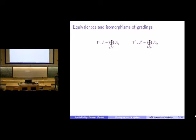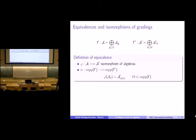Now, to classify gradings we need to know when two gradings are equal. There are at least two ways of doing this, and we work with both. Consider two gradings gamma and gamma-prime over algebras A and A-prime, where the grading groups G and H can be different. One definition is to say they are equivalent if there is an isomorphism of algebras sending each homogeneous component to another homogeneous component.